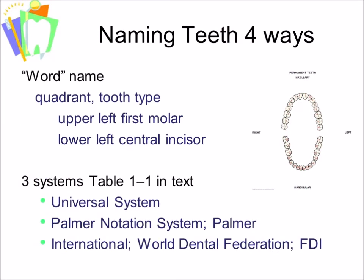We have four ways to name teeth. We can use a word name, naming the quadrant and the tooth type, such as upper left first molar, lower left central incisor, upper right second premolar, or in the deciduous teeth, the upper right deciduous first molar.